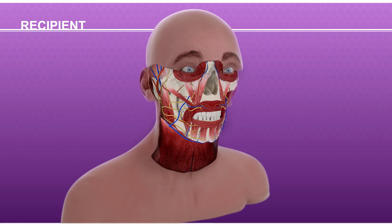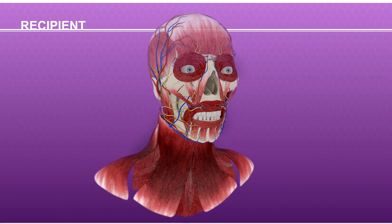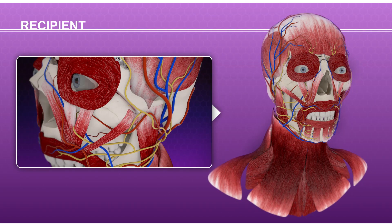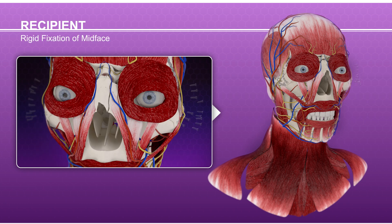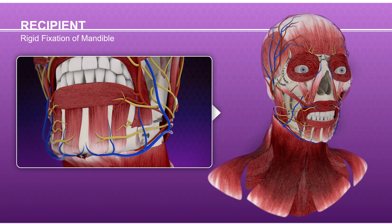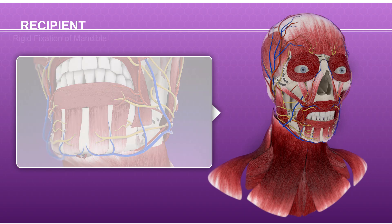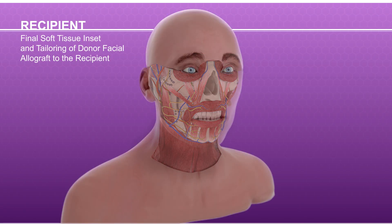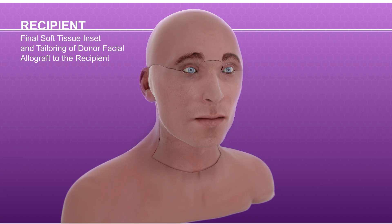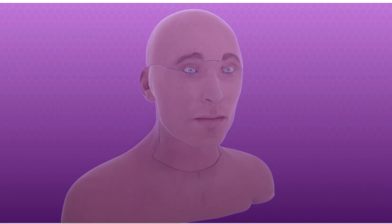This allowed precise inset of the donor skeletal segments and overlying soft tissues, as well as coaptations of facial nerve branches and vascular anastomoses. Accurate mid-face skeletal alignment was ensured, in addition to optimal mandibular contour. Rigid fixation of the mid-face was performed using titanium plates, and bicortical lag screws were used for mandibular fixation. The remainder of the facial allograft was then tailored to resurface the entire recipient defect and achieve final soft tissue inset.